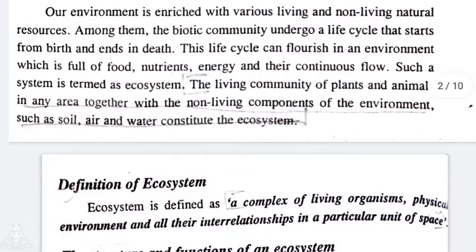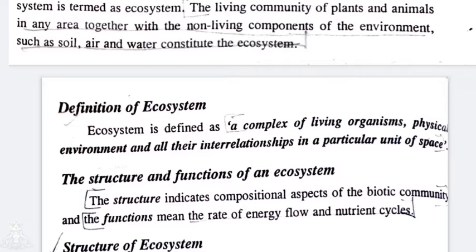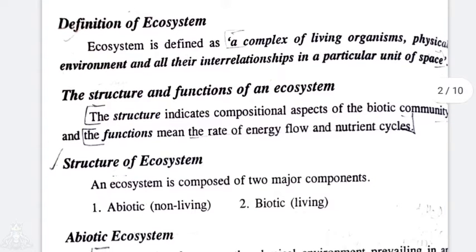The next term is Ecosystem. An ecosystem has both a biotic and abiotic community. The living community of plants and animals in any area, together with the nonliving components of the environment such as soil, air, and water, constitute the ecosystem.